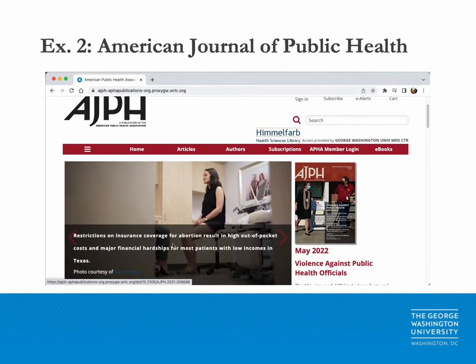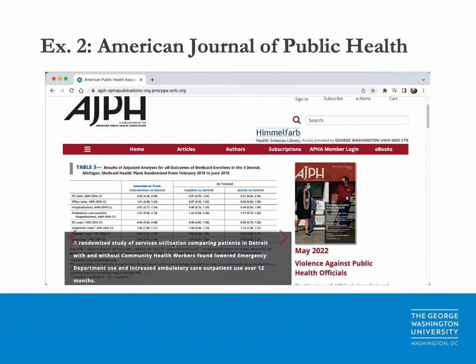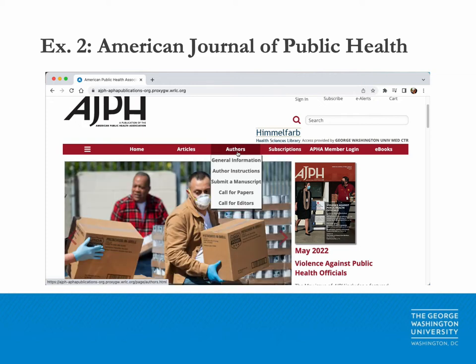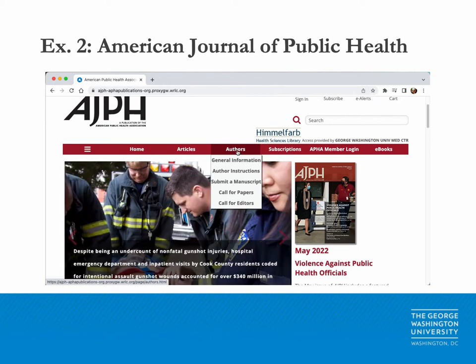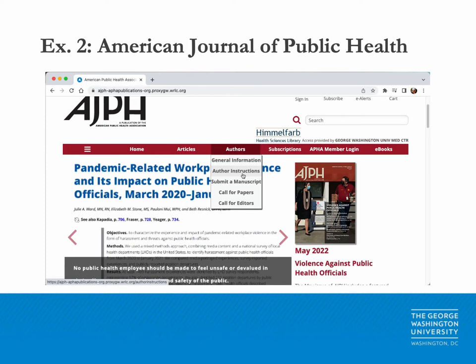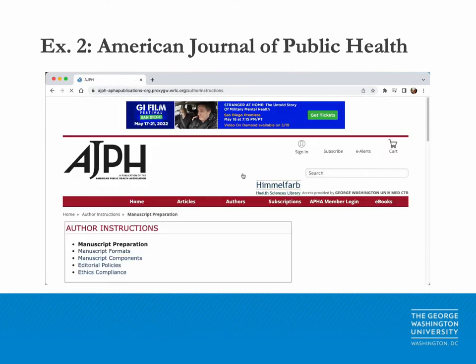The process for locating author submission guidelines is similar for the American Journal of Public Health. Start on the home page and navigate to the author section, which is located in the top menu. A drop-down menu will appear — select author instructions.